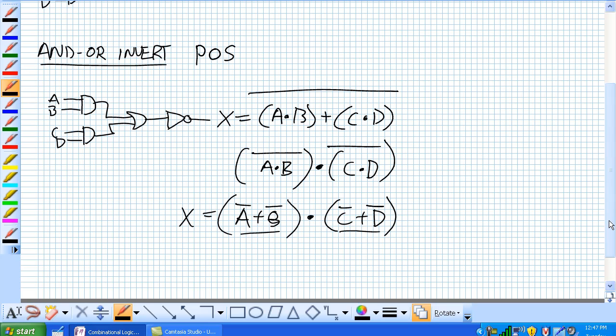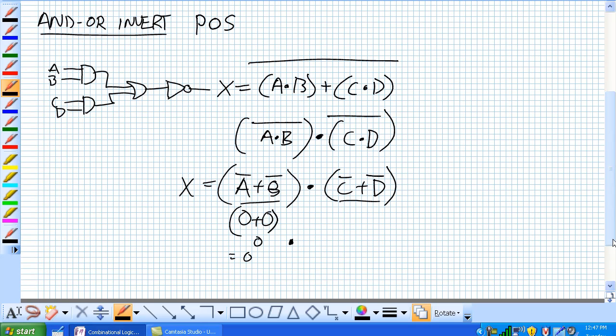The way to think about this, the output is low if both A and B are high or both C and D are high. Just think about this. If A is high, it's a 1, so not A would be 0. B is high, so not B would be 0. 0 or 0 would be a 0, and 0 anded with anything is a low. So, the output is low if both A and B are high or both C and D are high.